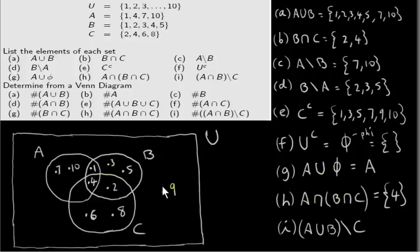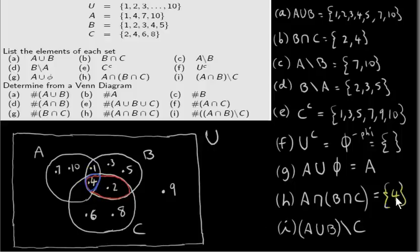Here we have the intersection of B and C, which is the elements that are in both B and C — these two elements. And we want to take this set and intersect it with A. A intersected with this set is just the intersection of all three sets, which consists of a single element — that element is four. Notice that it doesn't actually matter where we put these brackets — the intersection operator is associative, just like addition of numbers.